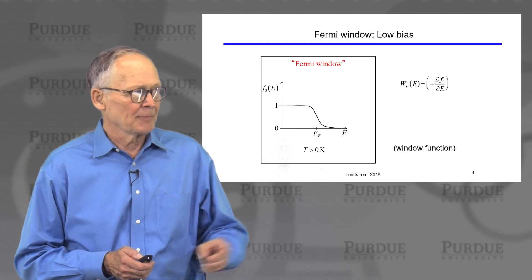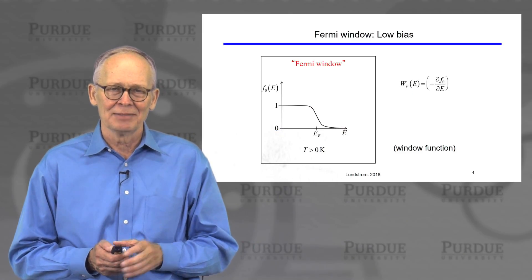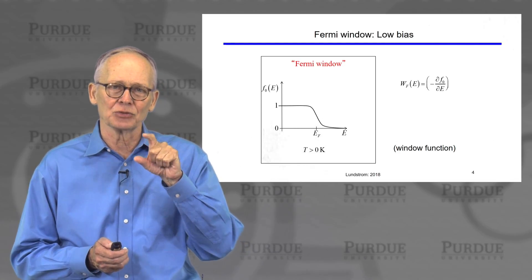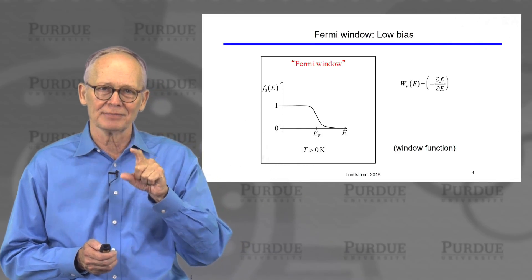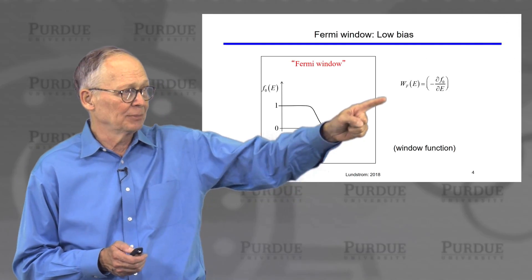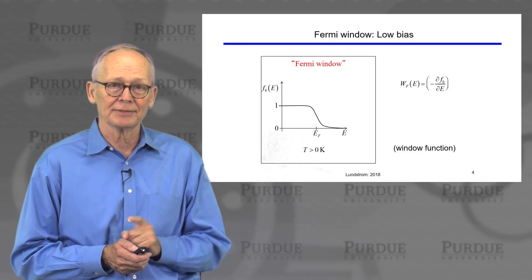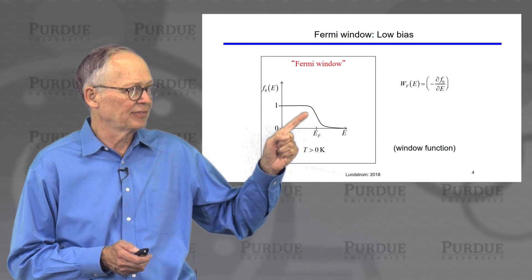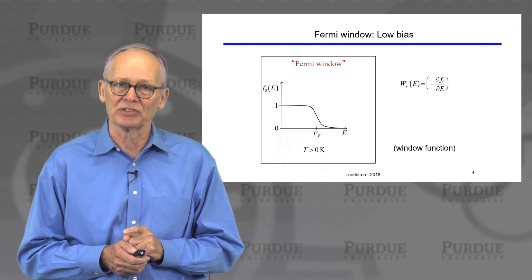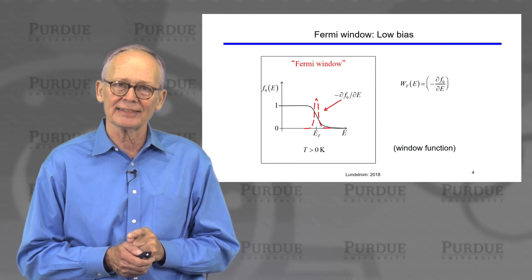I'll call that a window function because it describes the window of energies over which current flows. This is the important part for current flow — it's simply minus dF0/dE. We know what the Fermi function looks like: it only has a finite slope around the Fermi level and the slope is negative. So minus dF0/dE looks like a peak right about the Fermi level.